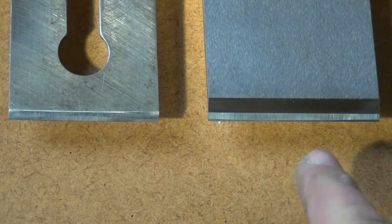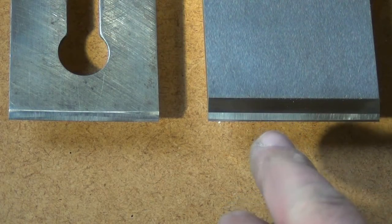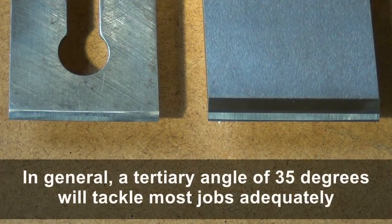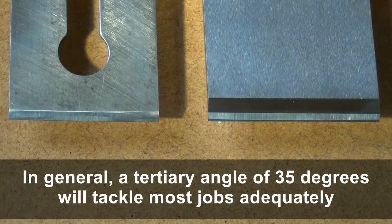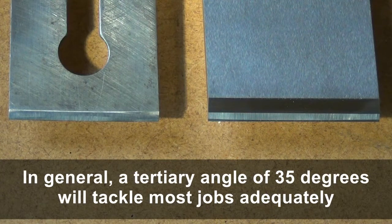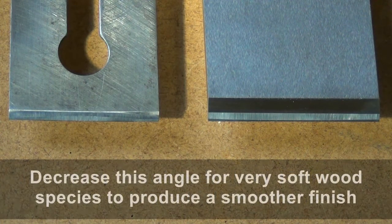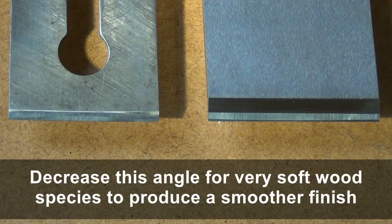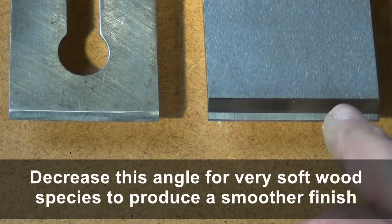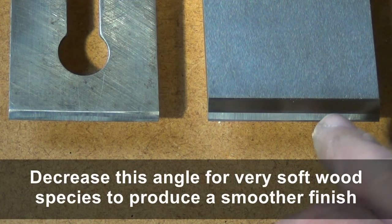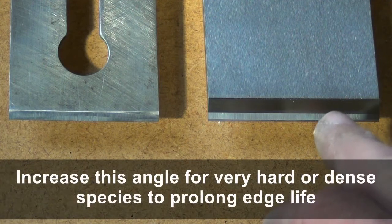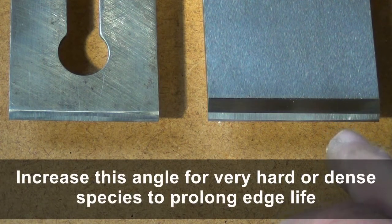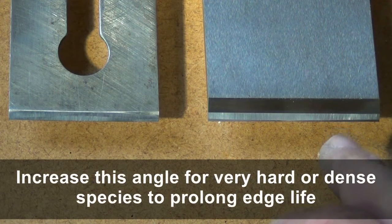Assuming a 45-degree frog, the tertiary bevel you'll require would be about 35 degrees for most general work. If you wish to deal with very soft wood, you might decrease that angle to perhaps 25 degrees or even less for a smoother finish. In very hard woods, you may increase that angle to protect the edge.